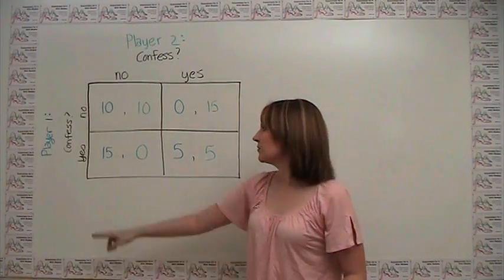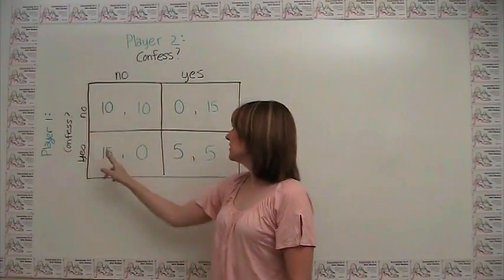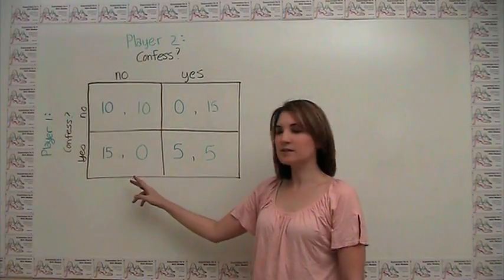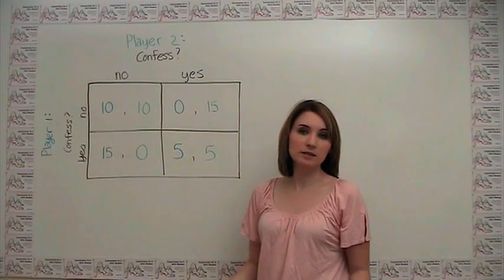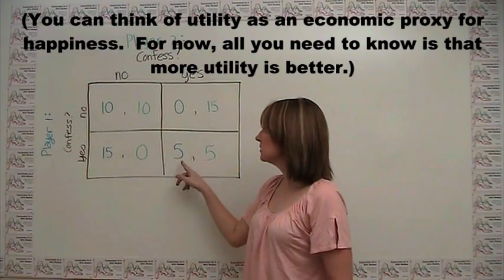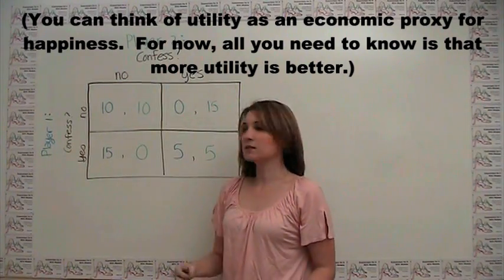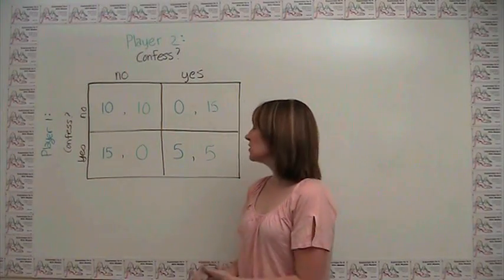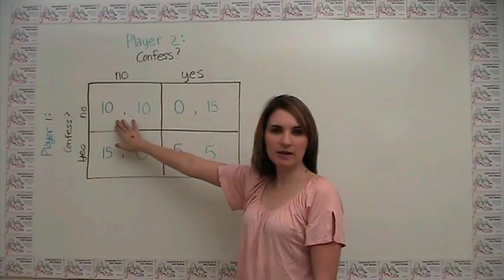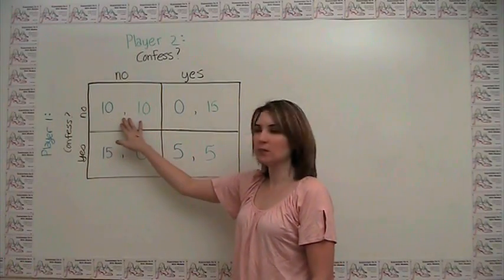We can represent the payoffs to that sort of situation in a table as follows. You'll notice here that we have Player 1 and Player 2. I made things nicely color-coded such that we have Player 1's payoffs in terms of utility in blue to match Player 1, and Player 2's payoffs in terms of utility in green. So if neither player confesses, they just sit there and hold tight, they each get a payoff of 10.